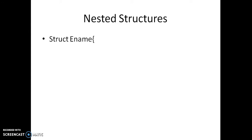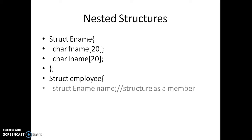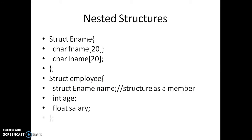I have a structure 'ename' with two members: first name and last name. And I am creating another structure 'employee'. The first member is actually the structure 'ename', to represent the name of the employee. And I have other members like age and salary. So when we look at employee, this employee has another structure as its member.